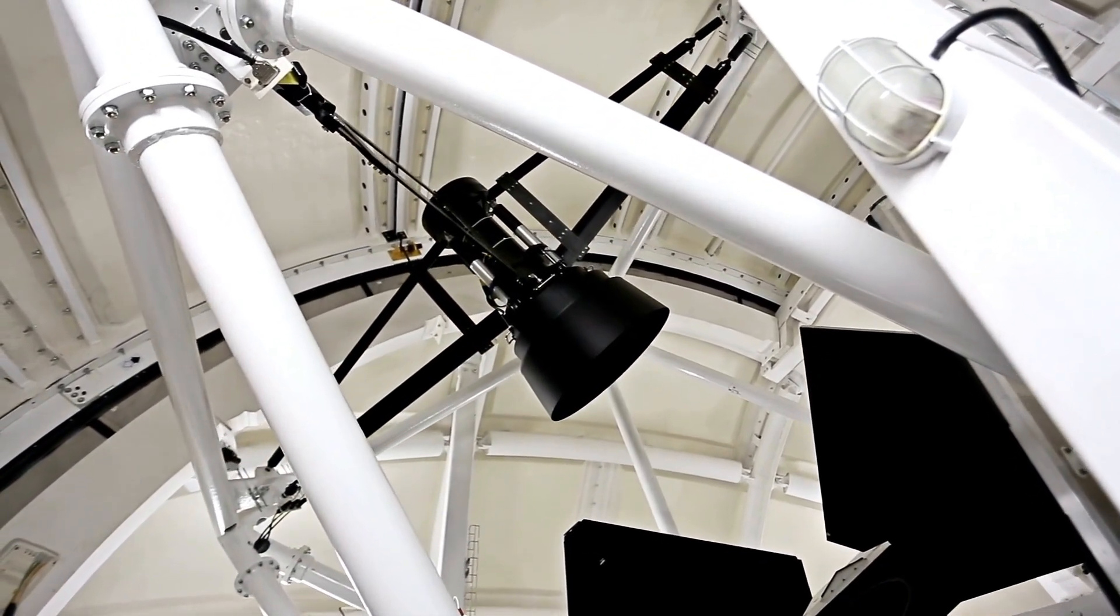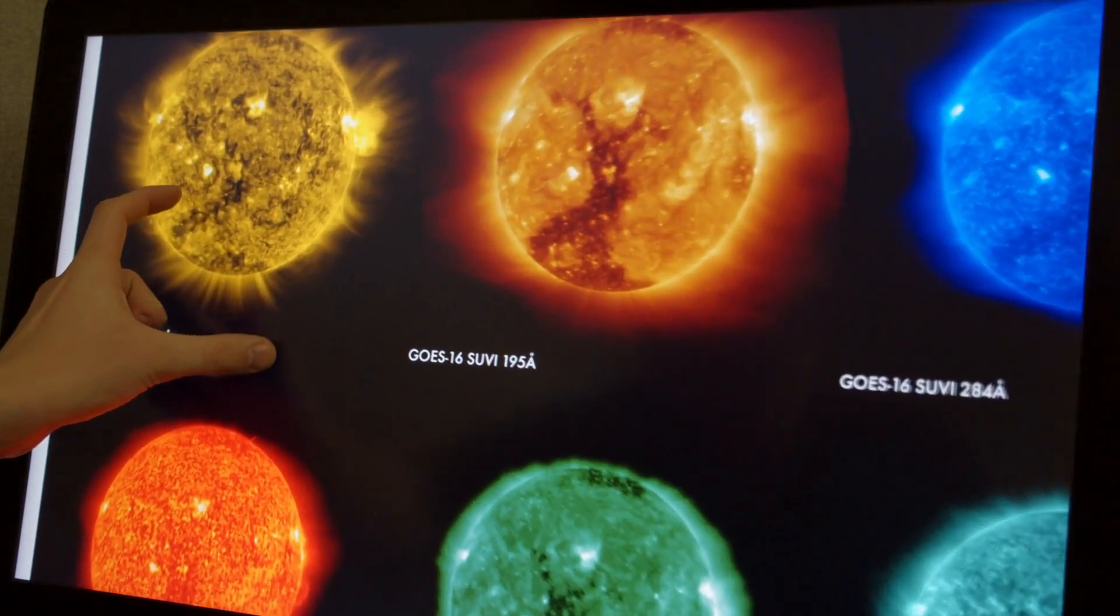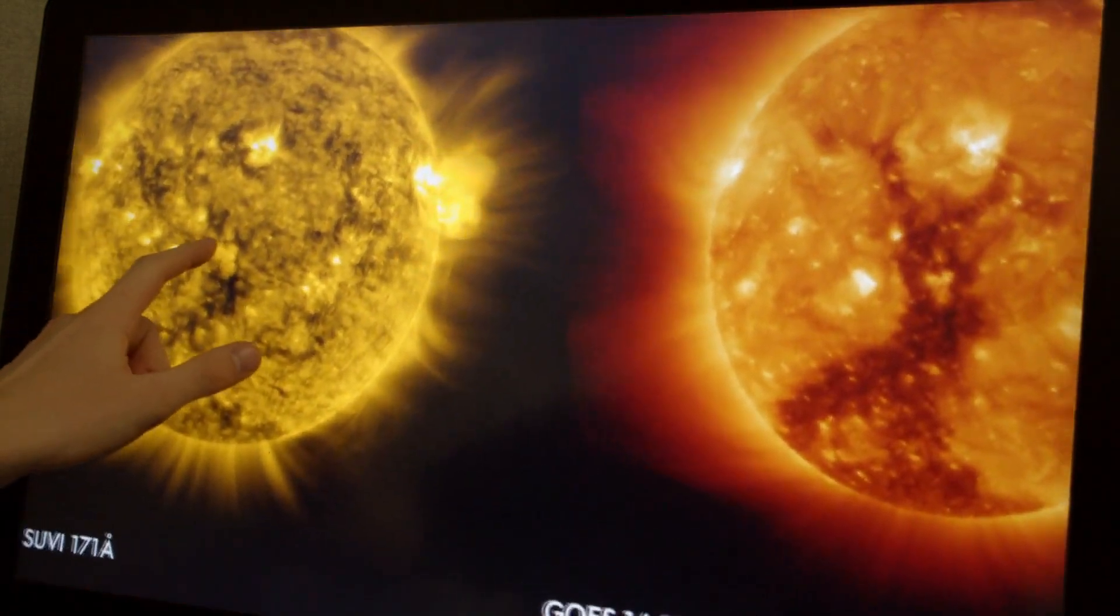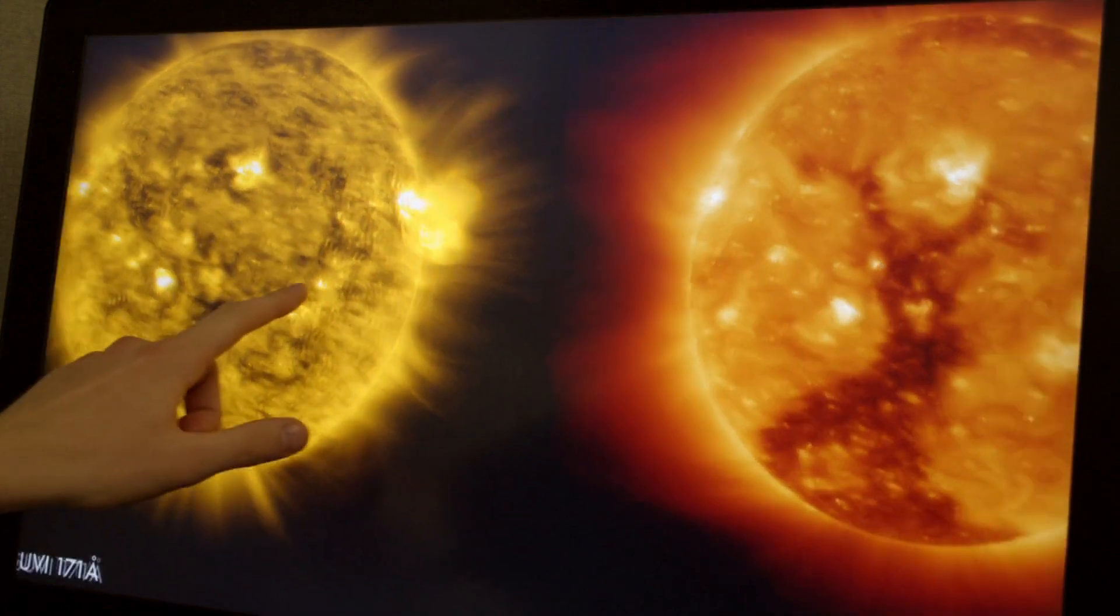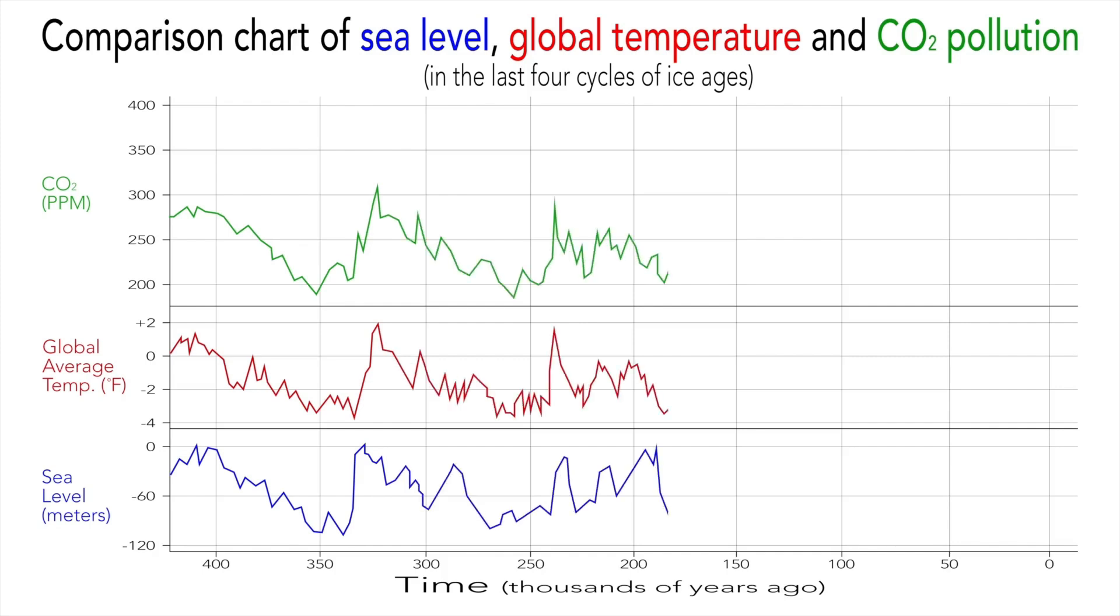Since Betelgeuse is located 650 light-years away, any supernova event happening at present would only become visible to us after 650 years due to the limitations imposed by the speed of light. Therefore, it is highly unlikely that we will witness the star's dramatic demise during our lifetime.